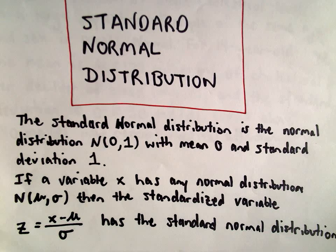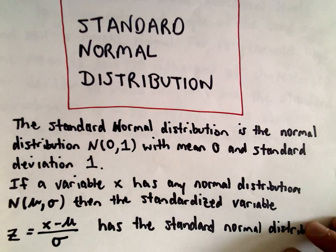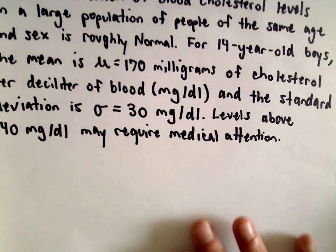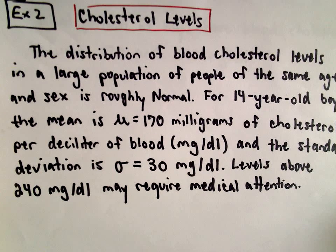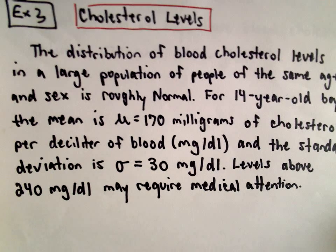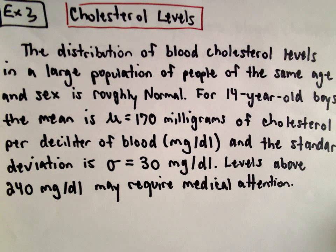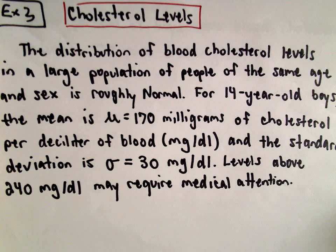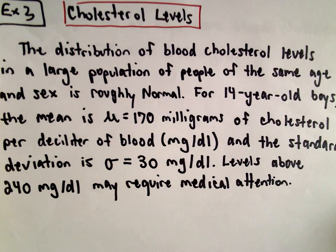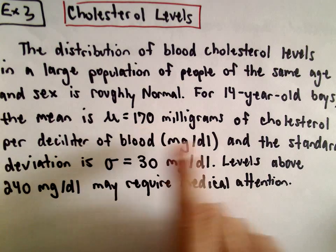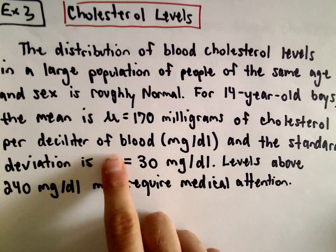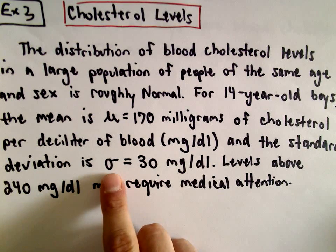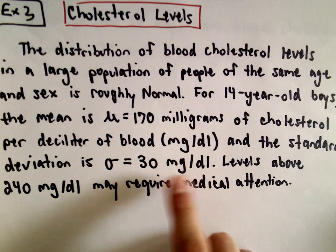Here we're going to look at another example of using normal distributions and z-scores to calculate some percentages. This is similar to example 2 that we did a second ago, so this is now example 3. We talked about cholesterol levels — for 14-year-old boys, the mean is mu equals 170 milligrams of cholesterol per deciliter of blood, and the standard deviation is sigma equals 30 milligrams per deciliter.